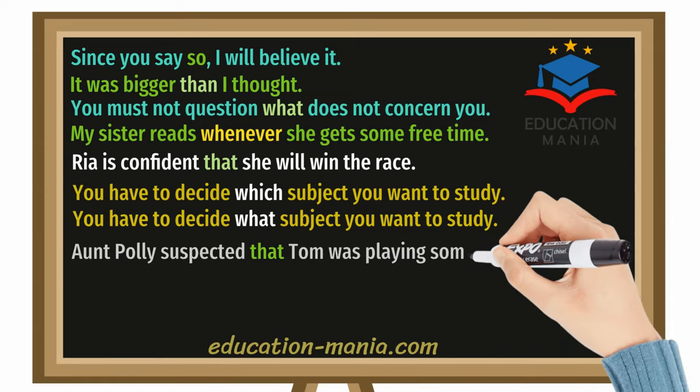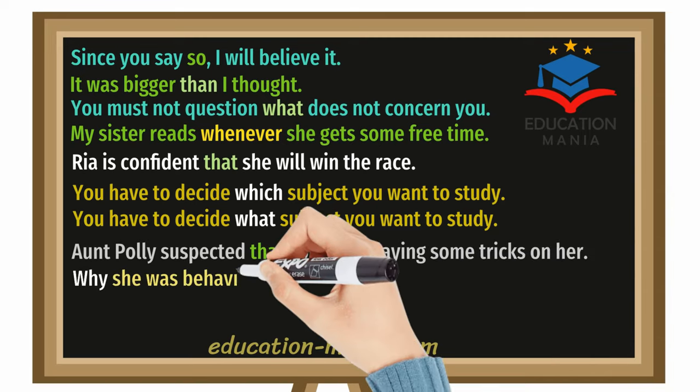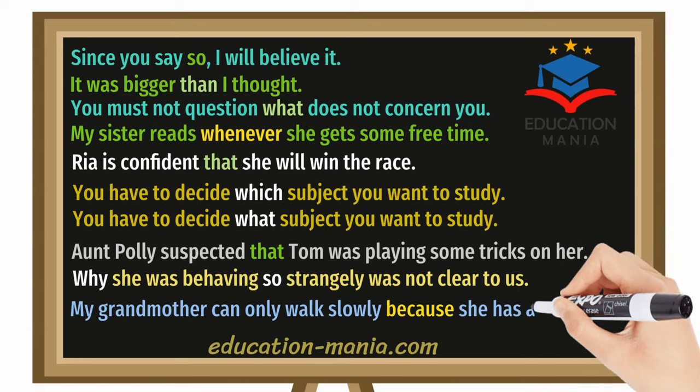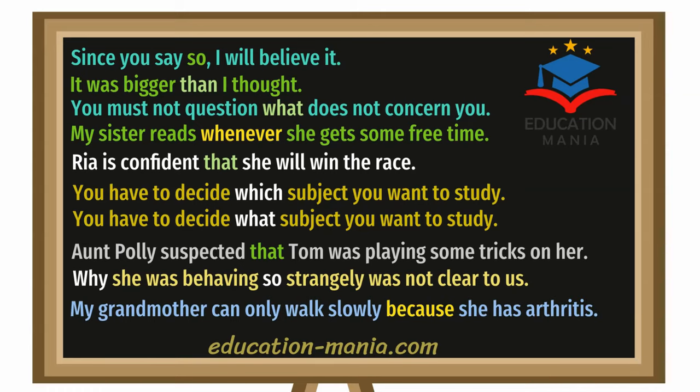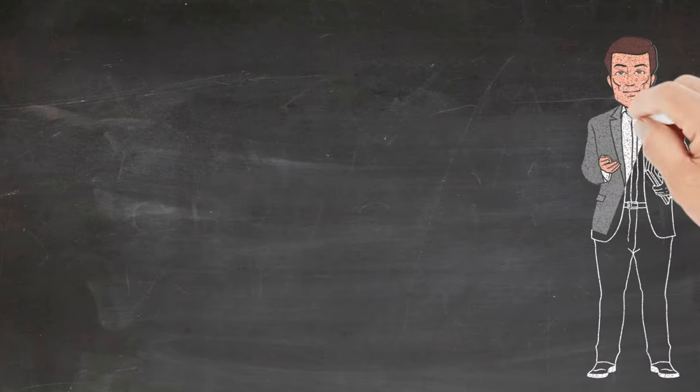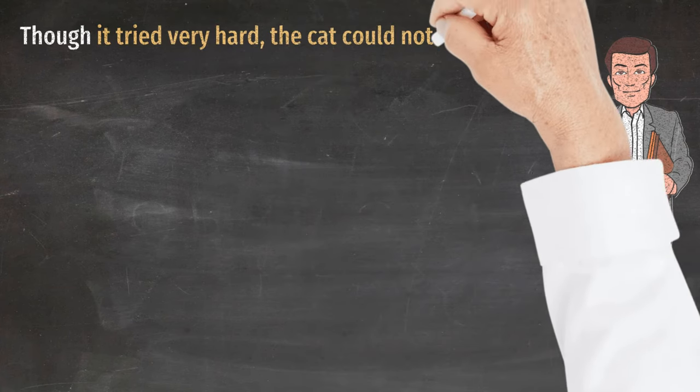Aunt Polly suspected that Tom was playing some tricks on her. Why she was behaving so strangely was not clear to us. My grandmother can only walk slowly because she has arthritis. Though it tried very hard, the cat could not climb the tree.